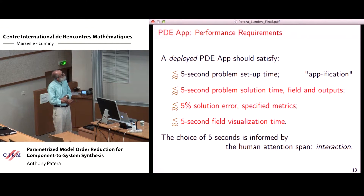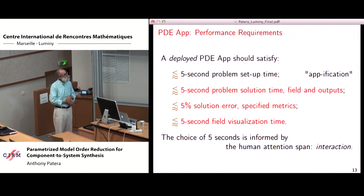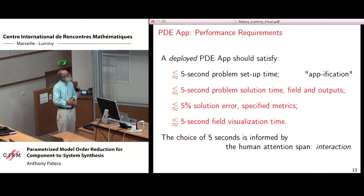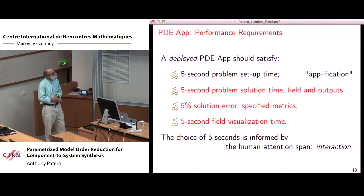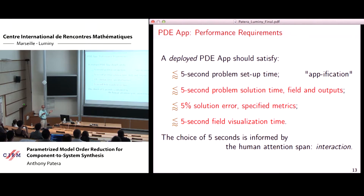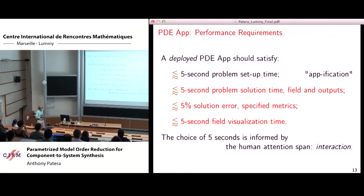There are four fives. A deployed PDE app should satisfy: five-second problem setup time, five-second problem solution time for the PDE field and outputs, five-percent solution error on specified metrics, and five-second field visualization time of the full three-dimensional field. The choice of five seconds comes from roughly the human attention span, since these are intended to be interactive. Five seconds is a reasonable order of magnitude for how long you might be able to amuse somebody.